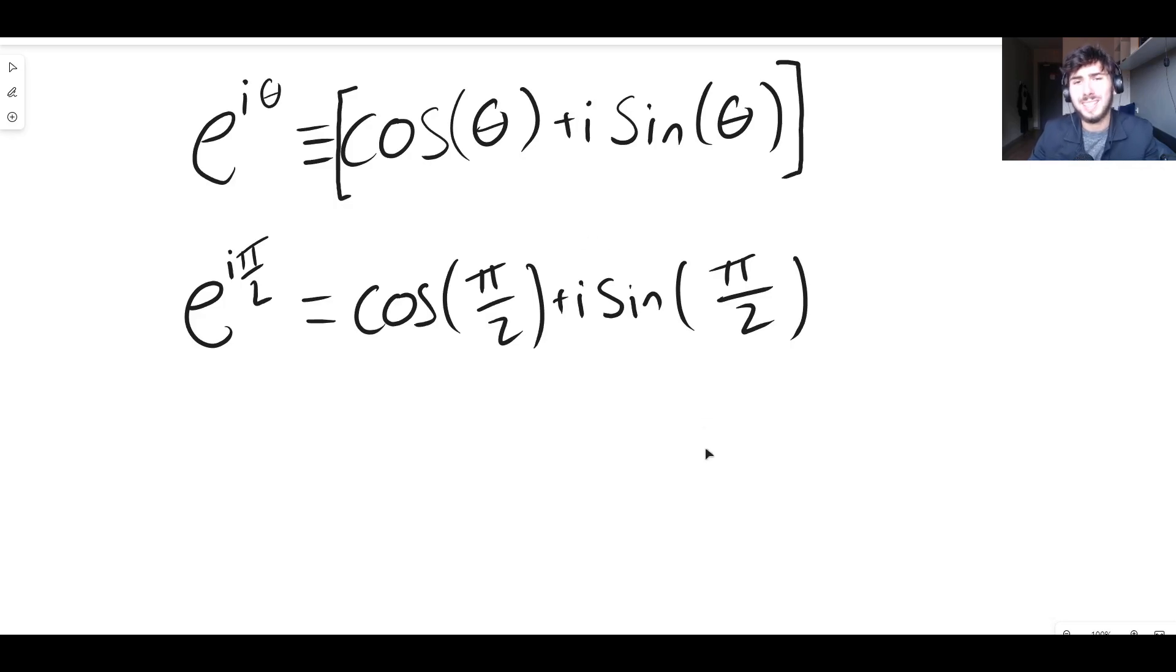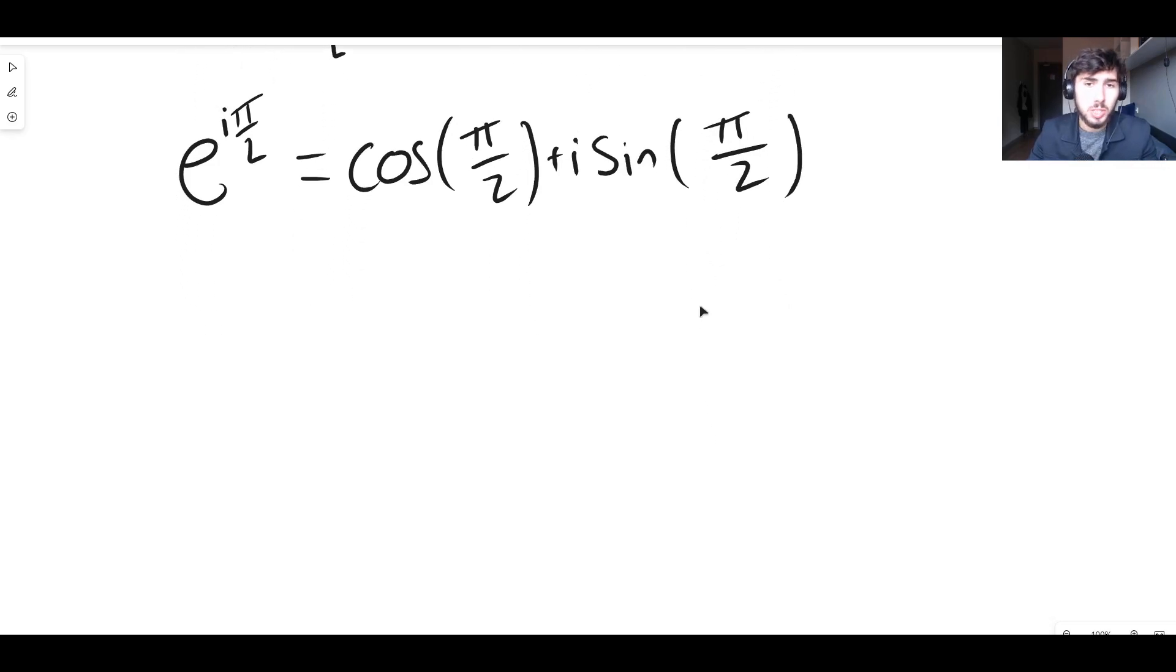All we're doing is we're letting theta be pi on two. You'll see why we're doing that in a second because the cos term disappears and we're going to get an i on its own on the right-hand side. So e to the i pi on two now is equal to, well, cos of pi on two, that's zero because pi on two is 90 degrees. It's cos of 90 degrees, which if you are unsure of what that is, put it on a calculator. It's indeed zero.